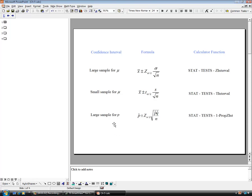And finally, large sample for p, n times p hat and n times q hat being at least 15, uses the one prop z int. Prop standing for proportion, z is the distribution we use. And int meaning interval, one meaning the number of different proportions. We'll refer back to this. I've got a couple examples on the next slides.